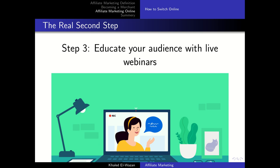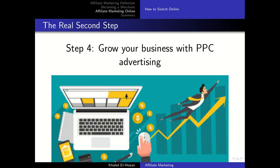The last step to becoming an affiliate marketer online is to grow your business with pay-per-click advertising — but only do this once you have a way of making back your money, because conversions are all that matter here. You can use pay-per-click advertising to get people to sign up for your webinars, grow your email list, or even make more sales.